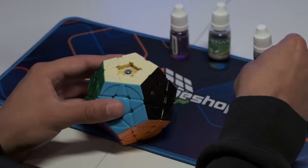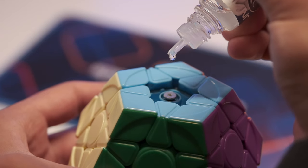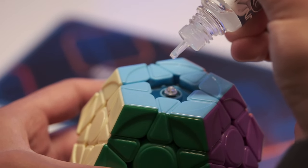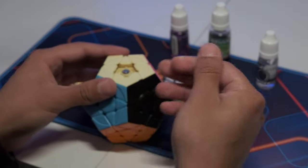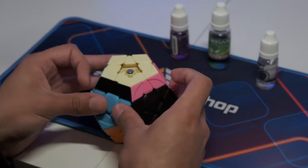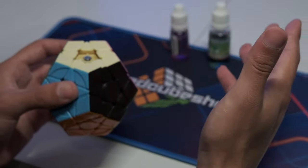And then once I've done that, I'll leave the center caps off still and I'll put Lunar on the screws, and that seems to help with the center cap tensioning and lubricate all the tensions and stuff. And all you need is like one or two drops on each screw, and it should be perfect.